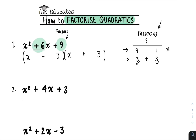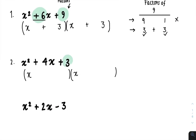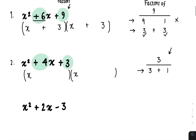Here we have x squared plus 4x plus 3. Your first step, again, is to open up two brackets, place an x here and place an x here. Then look at this last number, which is a 3. You list the factors of 3, which in this case is just 3 and 1. You then look at this number, which is a plus 4. Using the factors we just listed, how can I use this pair to add or subtract to give me plus 4? Well, you just do 3 plus 1. So you put a plus 3 here and a plus 1 here.